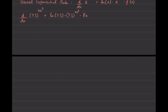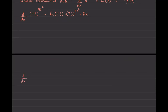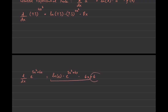This also applies when the base is e. So for e to the (3x squared plus 6x), the derivative is ln of e, times e to the (3x squared plus 6x), times the derivative of the exponent: (6x plus 6). Very important: don't forget the parentheses around 6x plus 6. Without them, you'd only be multiplying 6x by the first two terms, and the 6 would not be included — that would be incorrect.